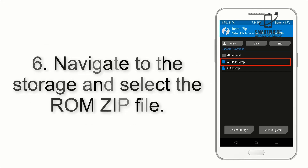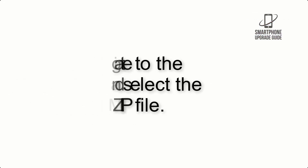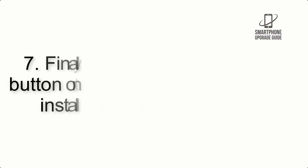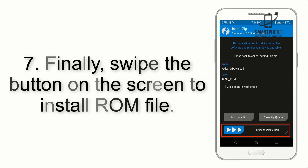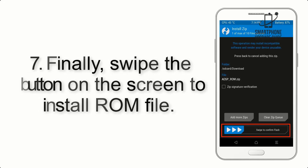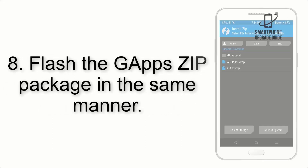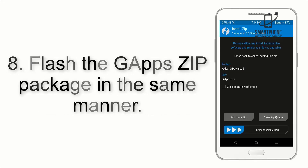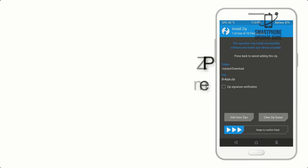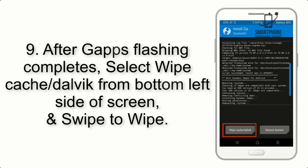Step 5: Go back to the recovery main screen and tap on the Install button. Step 6: Navigate to the storage and select the ROM zip file. Step 7: Finally, swipe the button on the screen to install the ROM file.